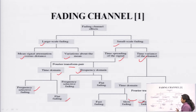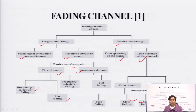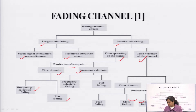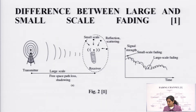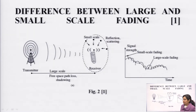There are two types of fading: large scale and small scale. In case of large scale, we consider the mean of a particular signal. In case of small scale fading, we use flat fading, frequency selective fading, and fast and slow fading.